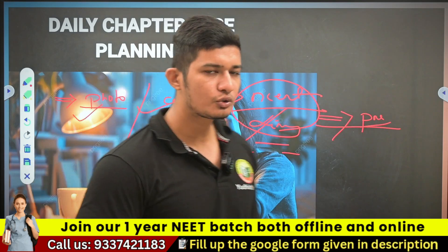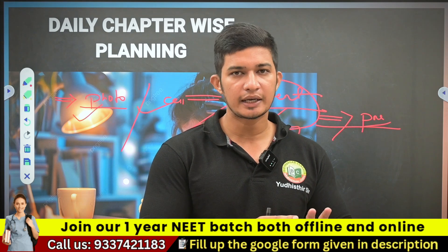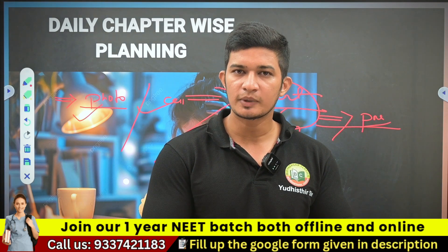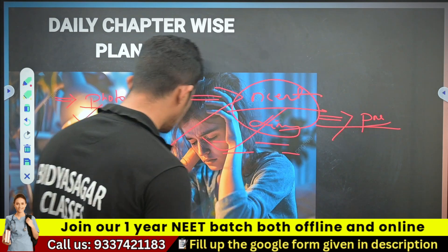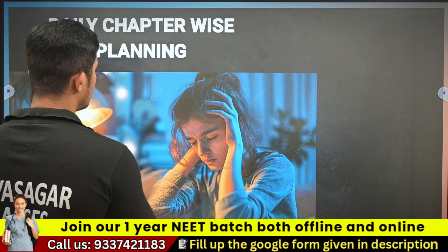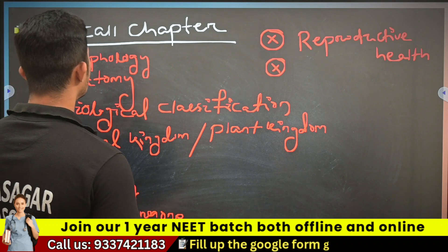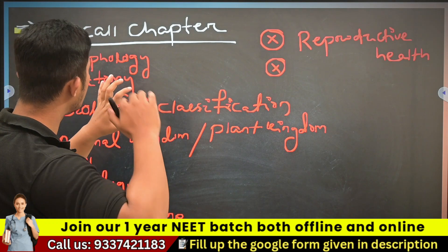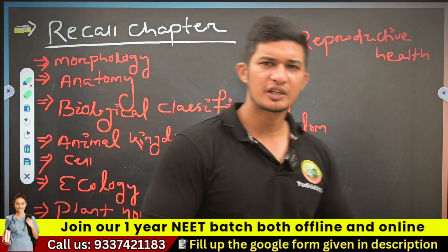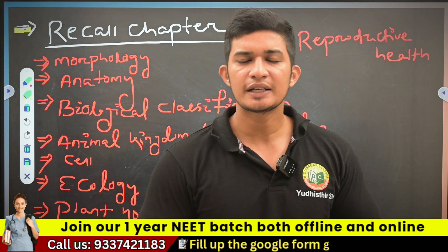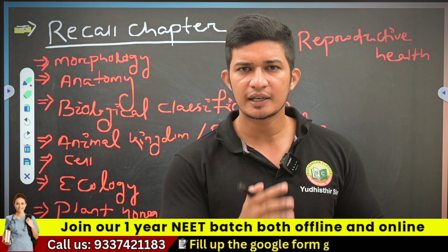We are going to study the next chapter. We will start with the following chapter as soon as possible. We will have a list of chapters — we will recall this chapter. We will have an example of the Morphology chapter: Inflorescence, Racemose, Cyma. We will have an example of Ovary Placentation — Marginal, Axial, Parietal, Free Central.